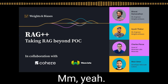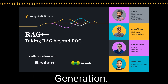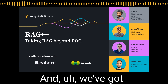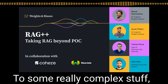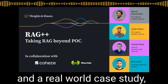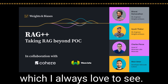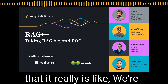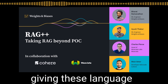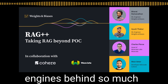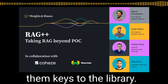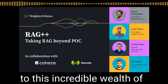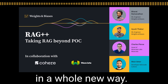We're diving into RAG today — Retrieval Augmented Generation — and we've got a ton to unpack. What's so cool about RAG is that it's like we're giving these language models, the engines behind so much of what we think of as AI, the keys to the library. They have access to this incredible wealth of information that they can then use to answer questions in a whole new way.